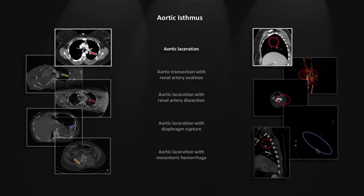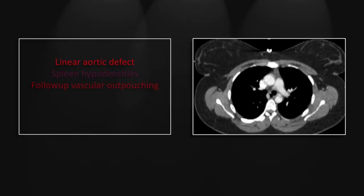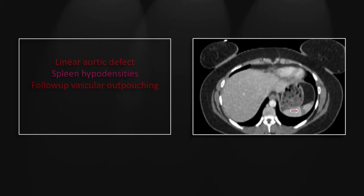Our first case is of an aortic laceration at the aortic isthmus. This is the most common site for aortic lacerations. You see here an irregular defect in the anterior aspect of the descending thoracic aorta at its junction with the posterior aortic arch. There is little or no mediastinal fluid. The presence of mediastinal fluid can be a useful indicator of a vascular injury, but its absence cannot be used to exclude a vascular injury. We have additional diagnostic help in the spleen, where you see wedge-shaped, well-circumscribed peripheral hypodensities consistent with thromboembolic phenomena, suggesting the presence of a proximal vessel injury.